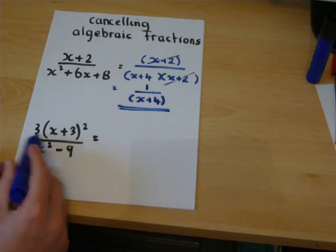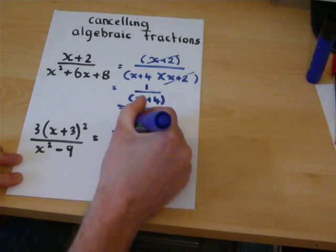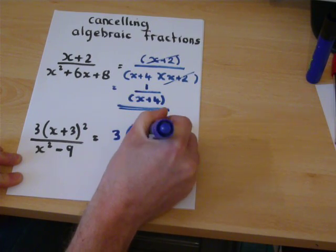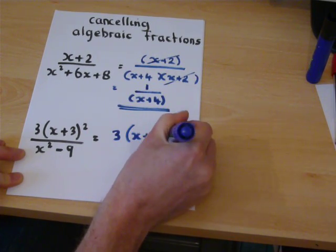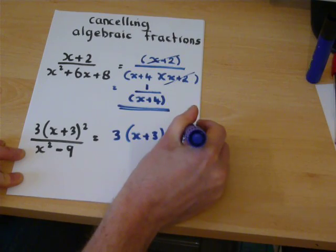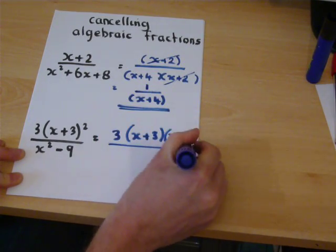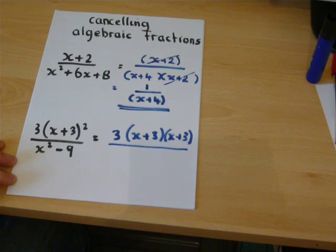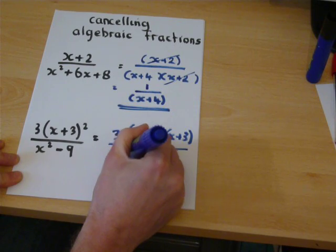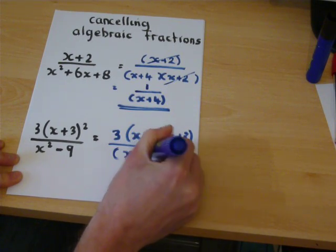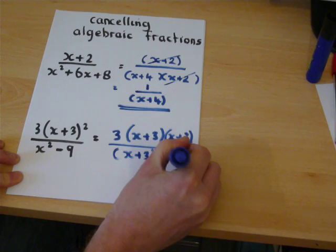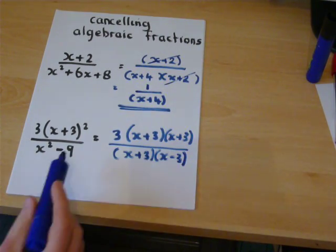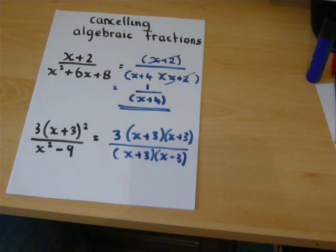And then we write it at the top, longhand. And then we recognise that as being the difference of two squares. We're left with one over x plus three, and x minus three.